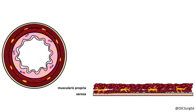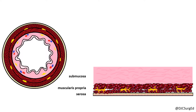The submucosa consists of a layer of fibroelastic connective tissue. It is the strongest component of the intestinal wall and contains an elaborate network of lymphatics, arterioles, and venules, and an extensive plexus of nerve fibers and ganglion cells, or Meissner's plexus.